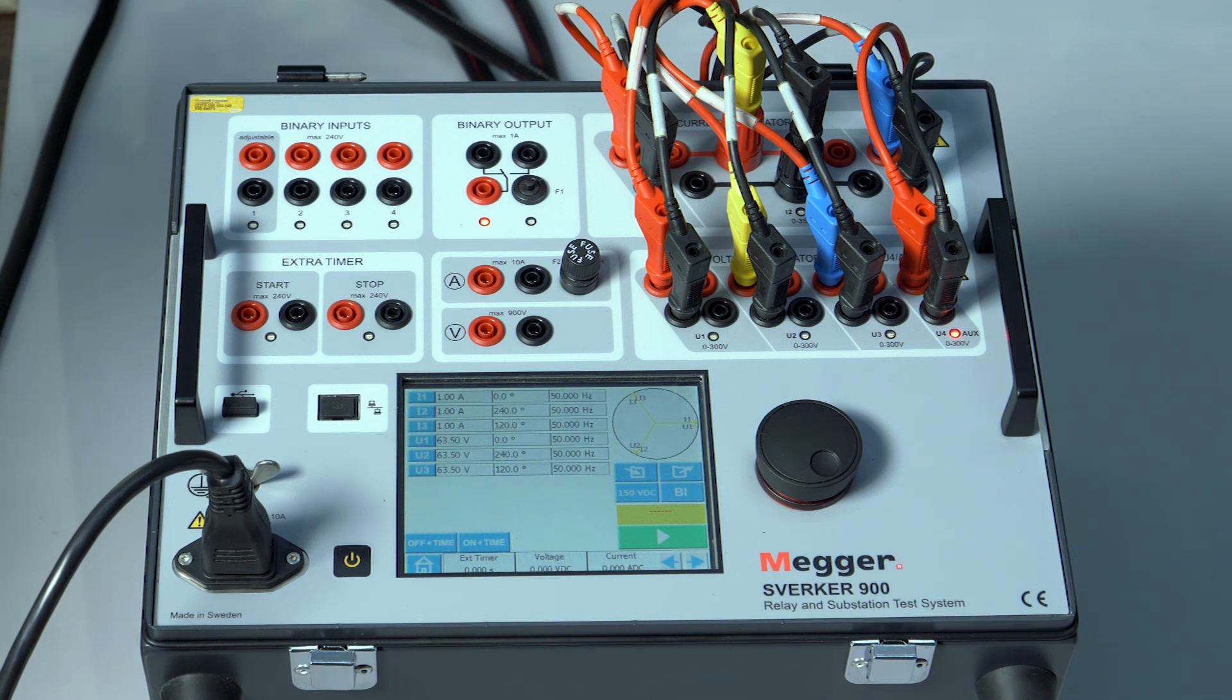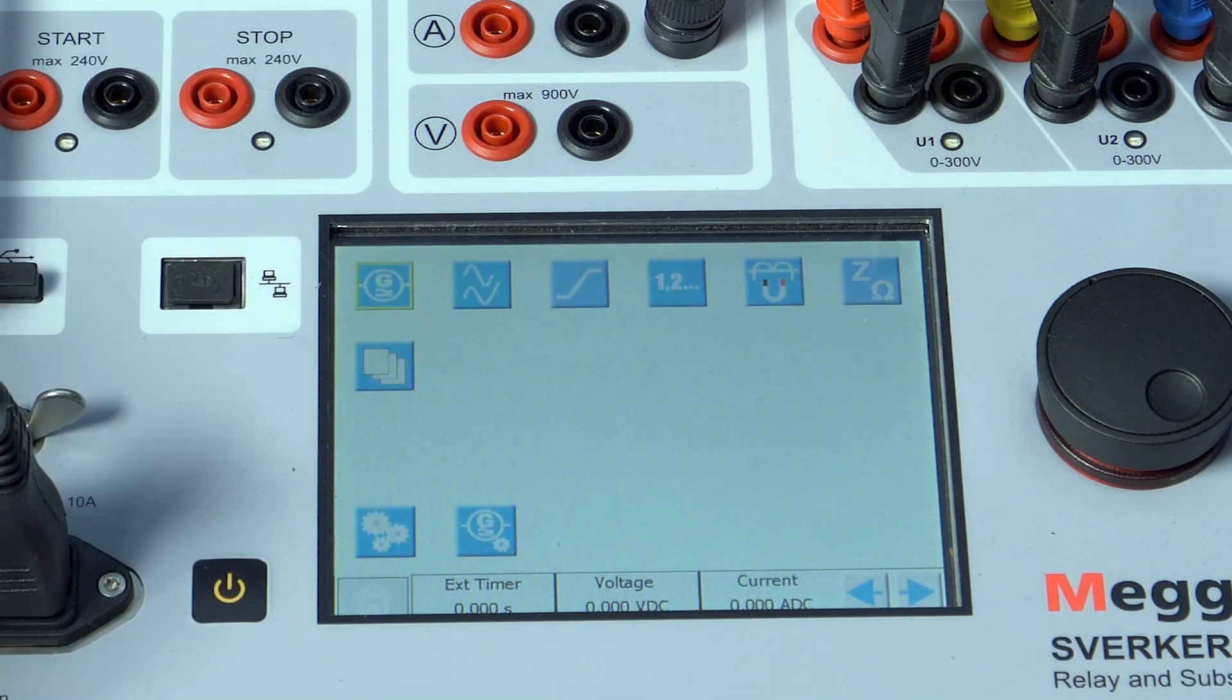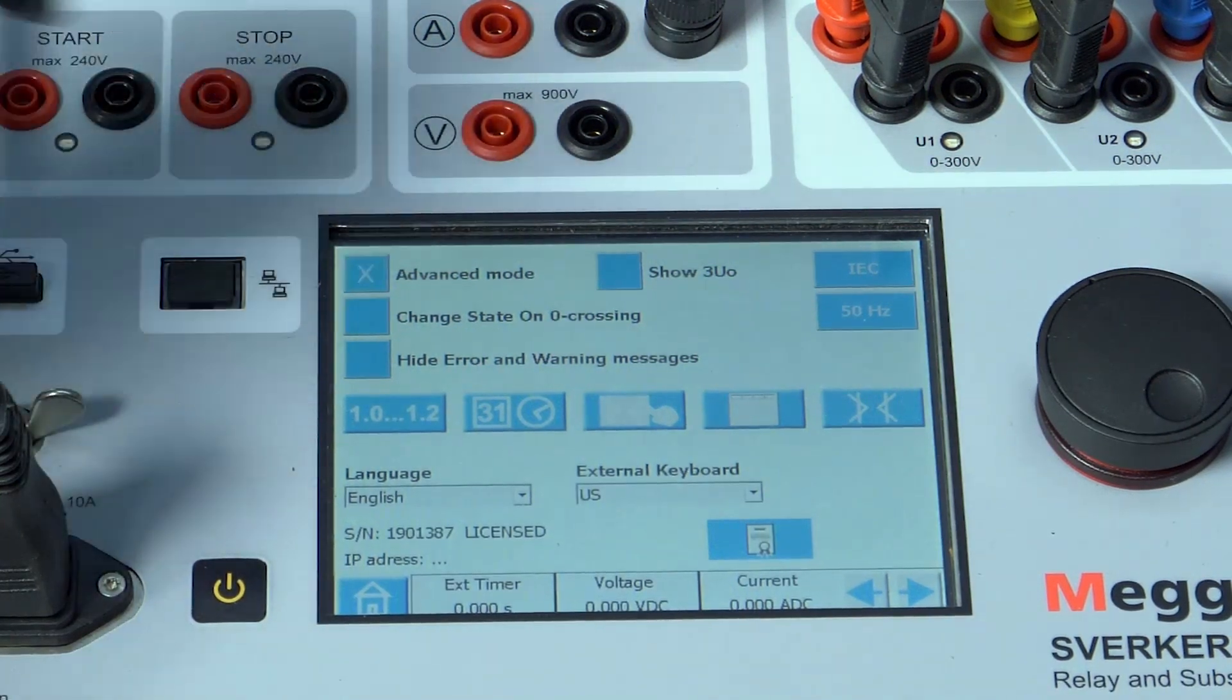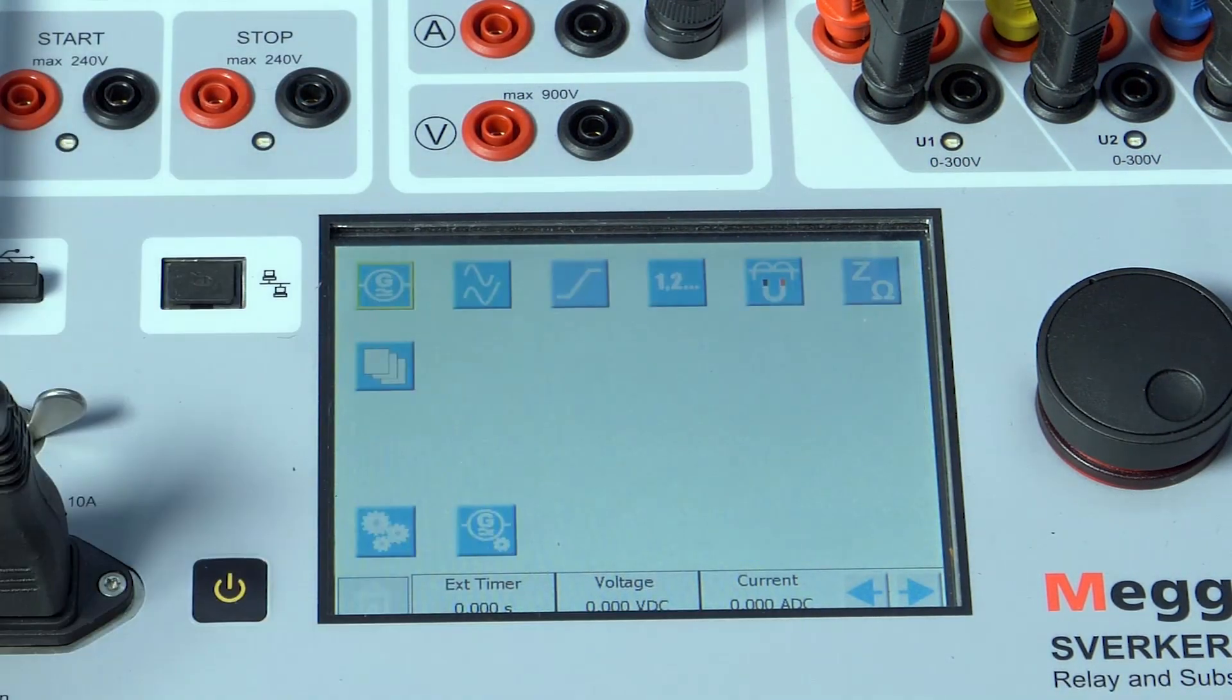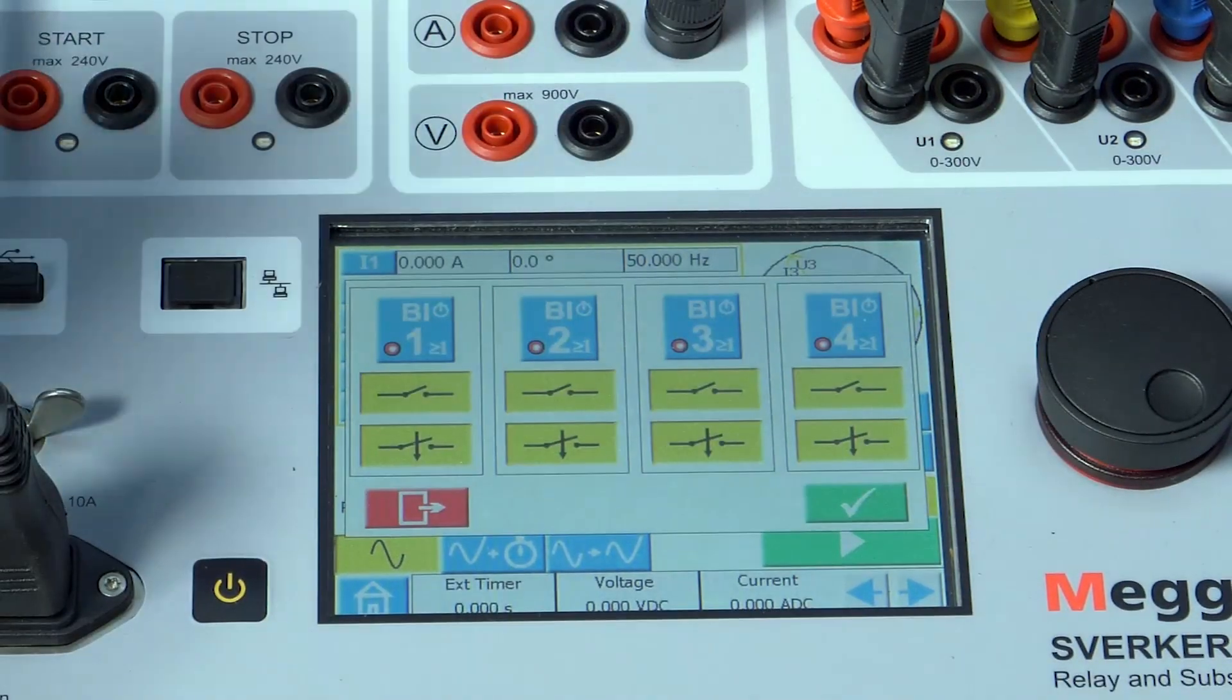To enable the advanced mode, click on the home screen, click on the settings tab, enable the advanced mode. Click on the home screen, click on pre-fault fault tab, choose the binary input tab, press binary input 1.